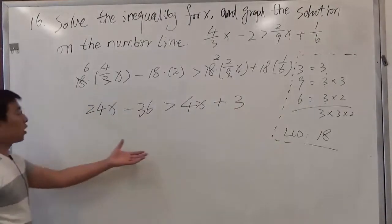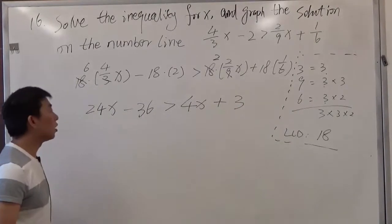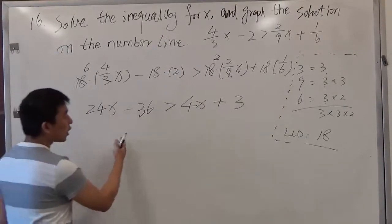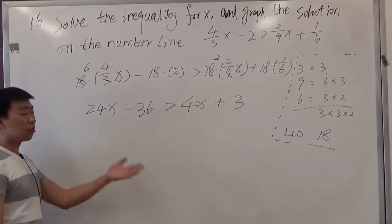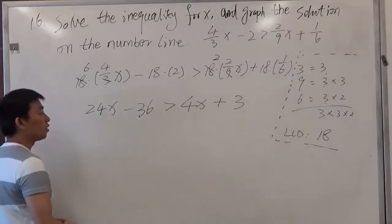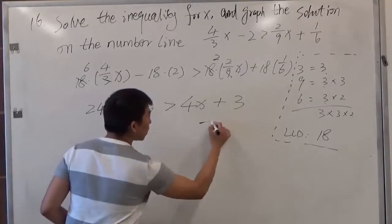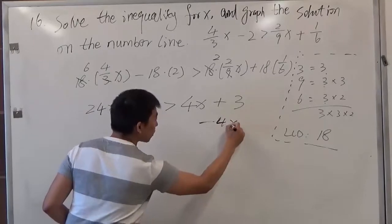So after we simplify, it becomes very easy. We have both sides with x terms. What we need to do is move the x terms to one side, numbers to the other side, then divide the coefficient from x. So we have 4x. We need to subtract 4x from both sides.